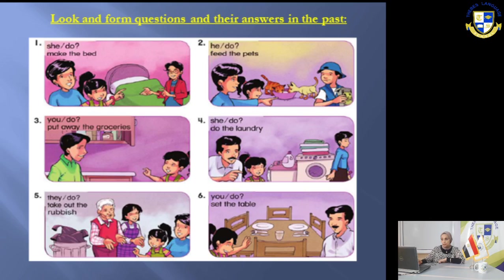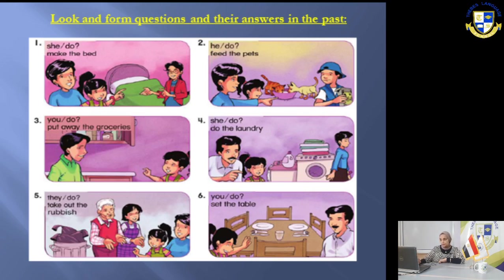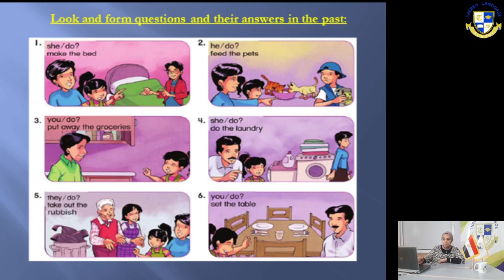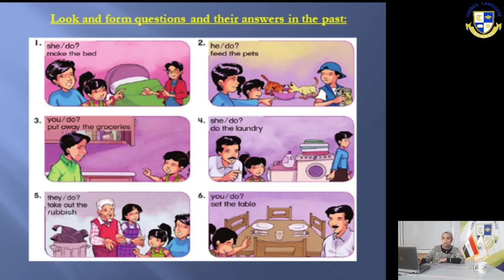On slide 6, we ask and answer questions in the past. Questions use 'did,' and answers must also be in the past. Number one: the picture shows 'she' and 'make the bed.' The question is: 'What did she do?' The answer: 'She made the bed.' We change 'make' to 'made' because we answer in the past tense. Number two: the picture shows 'he' and 'feed the pets.' Question: 'What did he do?' Answer: 'He fed the pets.' The past form of 'feed' is 'fed.'